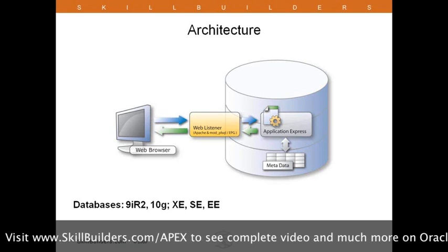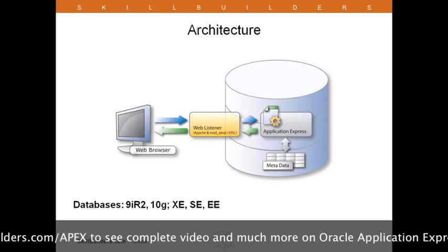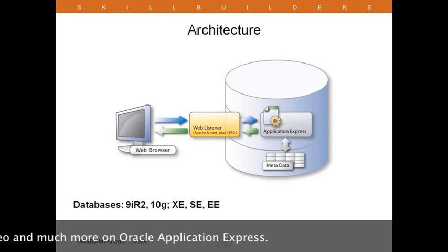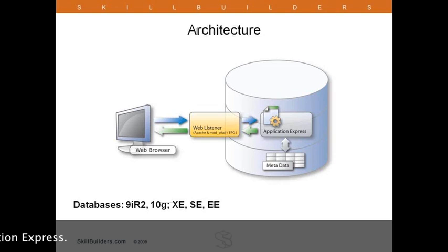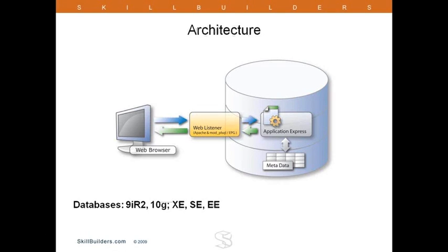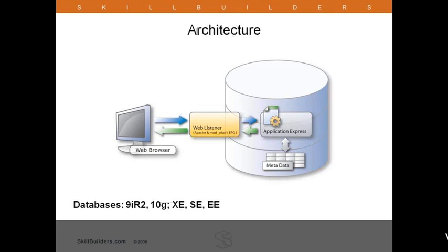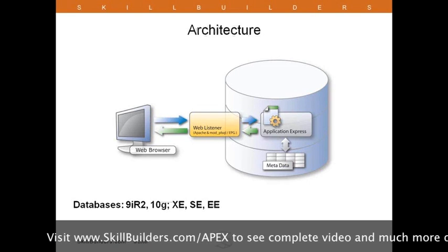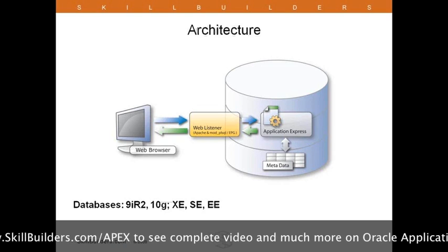Here we take a look at the overall architecture of APEX, and this is really three parts. On the left, we have the web browser, and on the right, a database. And in between the two, a web listener. The exact configuration of that web listener can vary, but the overall result is the same. The web browser communicates to the web listener, which forwards requests over to the database and into the APEX engine. The APEX engine then uses its own metadata combined with the data from your tables to generate an HTML web page, which it then returns back to the browser through the web listener. This works on all Oracle databases from version 9i R2 or better.